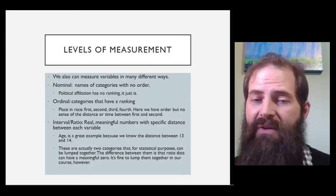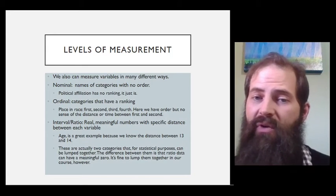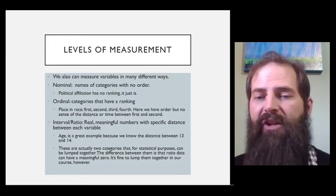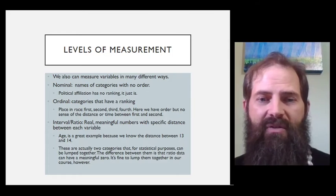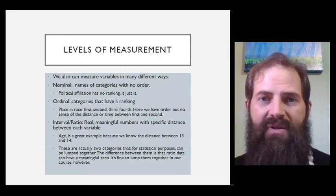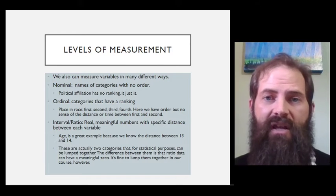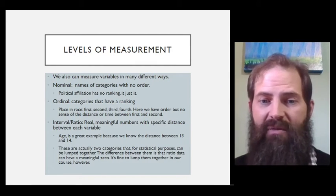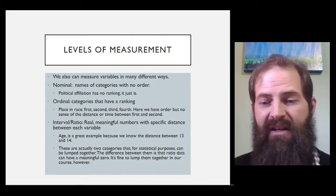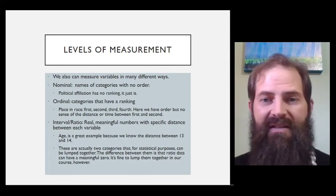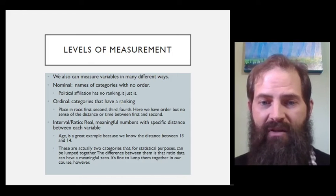With interval and ratio data, we now move from these categories that are rankable or not, and now we're moving into meaningful numbers that have actual distances between them. Age is a really great example of interval ratio data. I can tell you exactly how many days are between turning age 13 and turning age 14. It's 365 days between them, right? Likewise, I know exactly how much time it takes you to go from age 14 to age 15. We know how many days, hours, minutes, seconds, and so forth. We know exactly the distance between those.